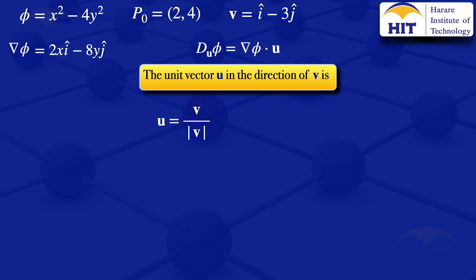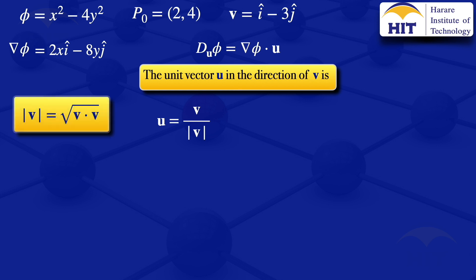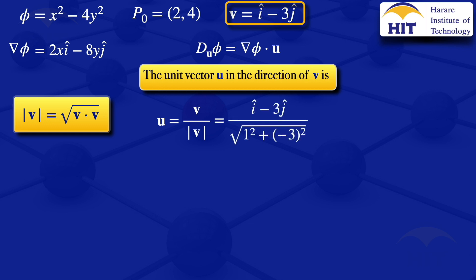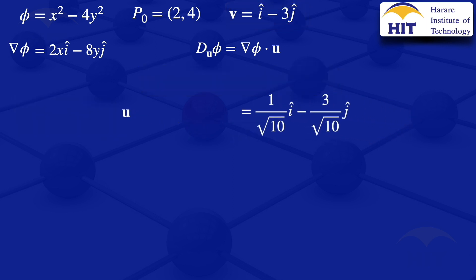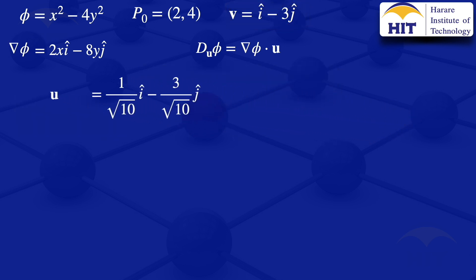The unit vector u in the direction of v is given by v divided by the norm of v, where the norm is the square root of the dot product of v with itself. Our v is i minus 3j, so u equals (i minus 3j) divided by √(1² + 3²), giving us (1/√10)i minus (3/√10)j.